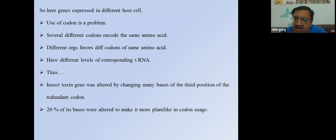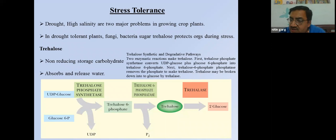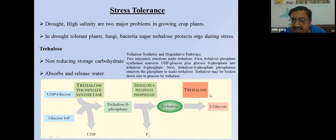Stress tolerance: drought and high salinity are two major types of stress. Stress-tolerant plants, fungi, and bacteria use trehalose, a non-reducing sugar that absorbs and releases water, to protect organisms during stress. UDP-glucose and glucose-6-phosphate are converted by trehalose-6-phosphate synthase into trehalose-6-phosphate (releasing UDP); trehalose-6-phosphate phosphatase then releases phosphate to form trehalose, which in the presence of trehalase produces two glucose molecules and decreases salinity stress problems.